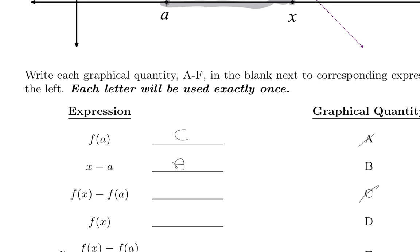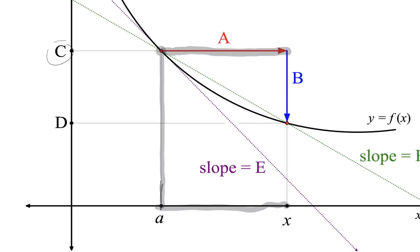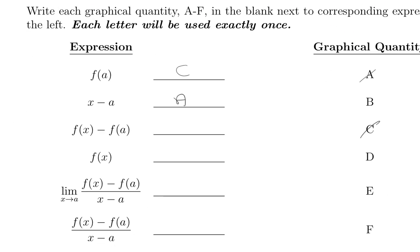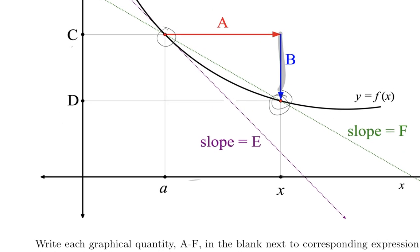Now, f of x minus f of a would be the value at f of x minus the value at f of a. The value at f of x is here and the value at f of a is there, and that distance is given by B. So f of x minus f of a equals B. Going back, f of x itself — going over to x and evaluating right there — is given by D.